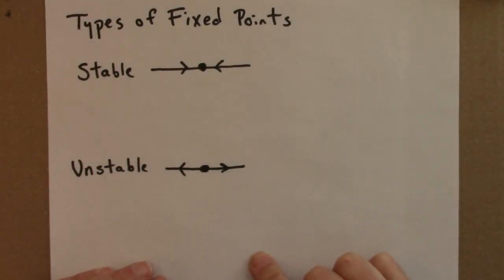I want to say a little bit more about different types of fixed points. For the squaring function, we saw two types of fixed points, stable and unstable.